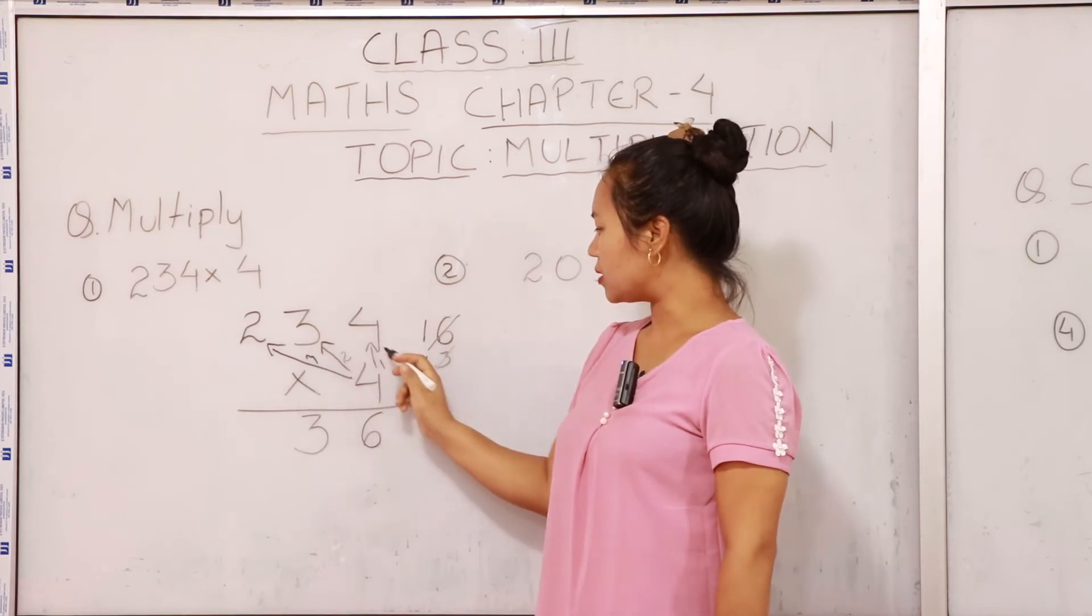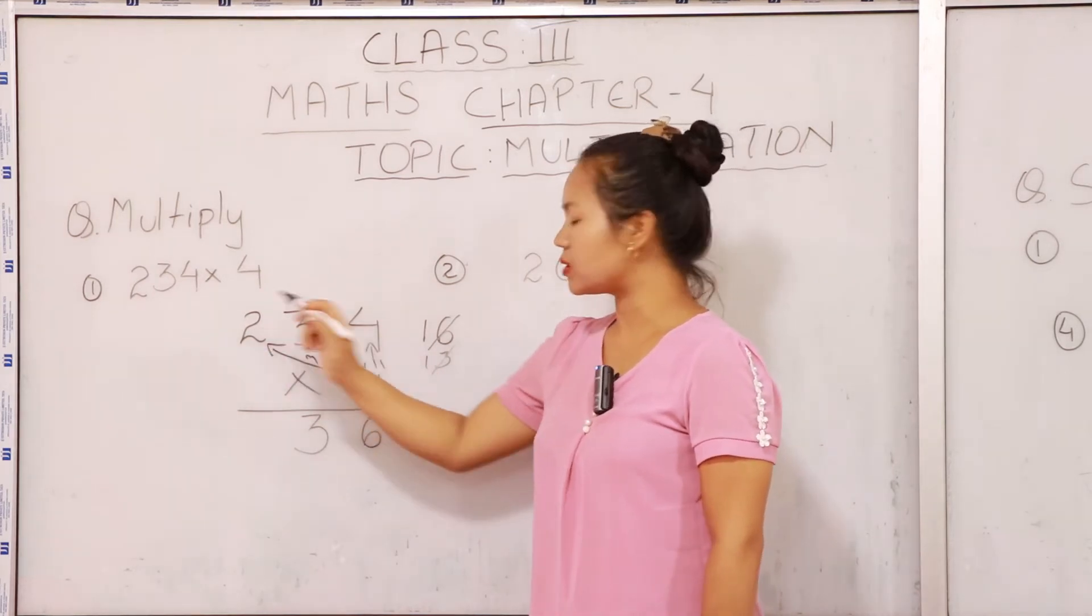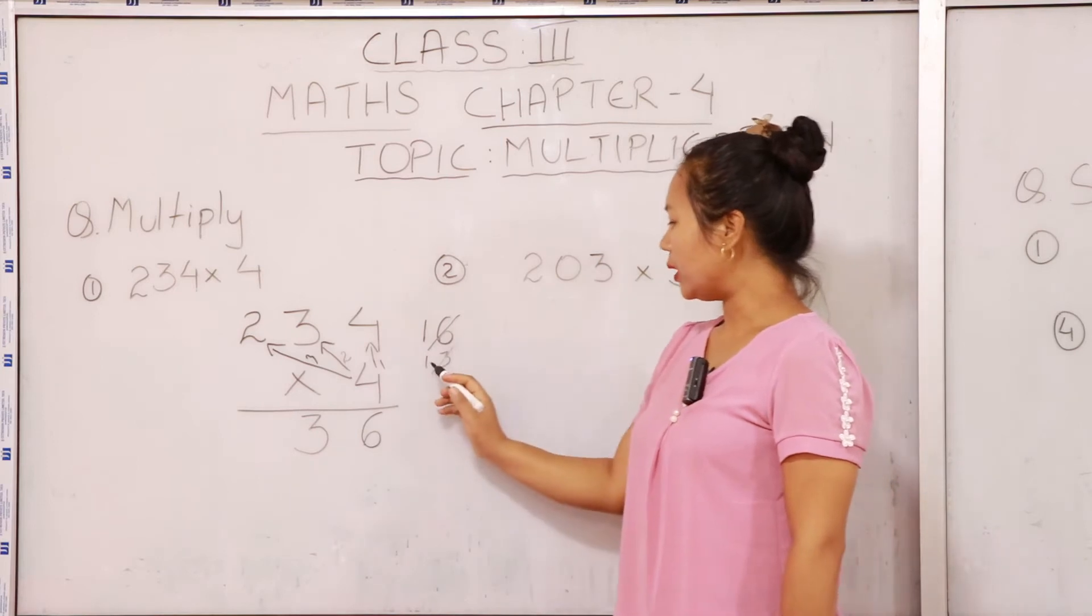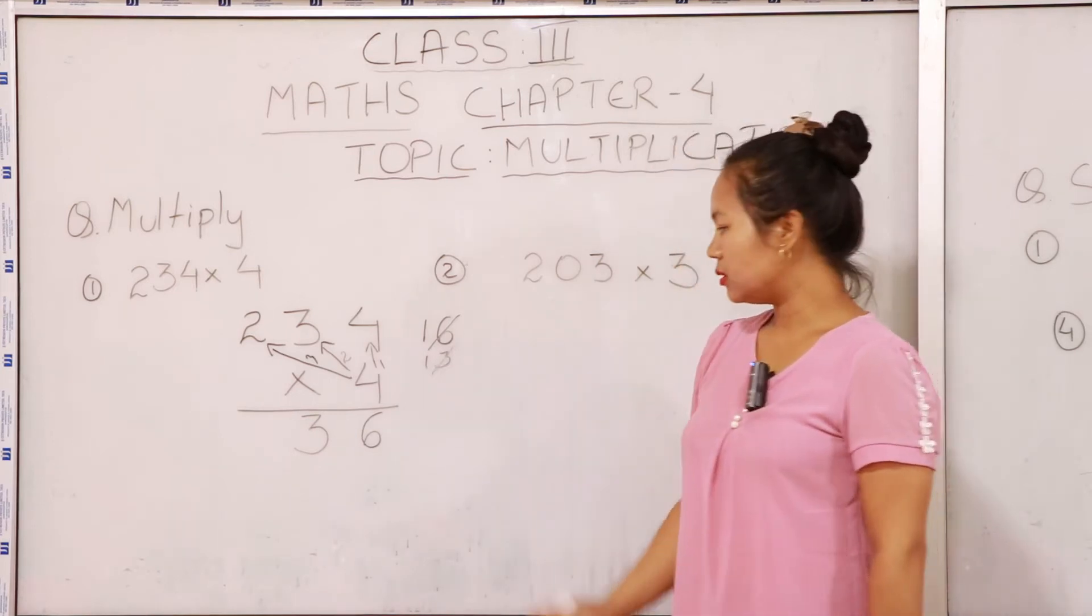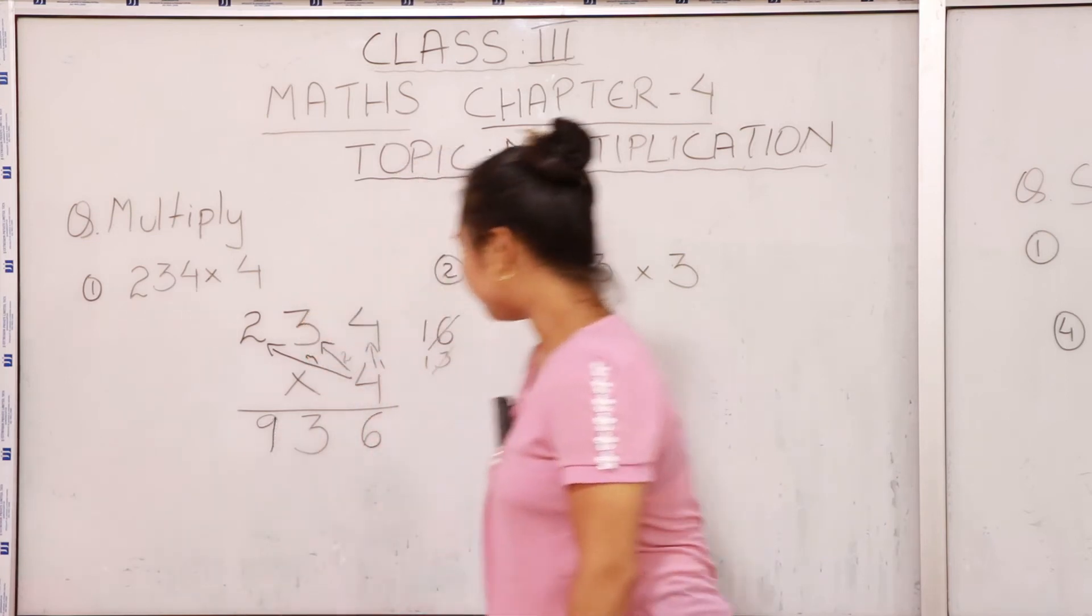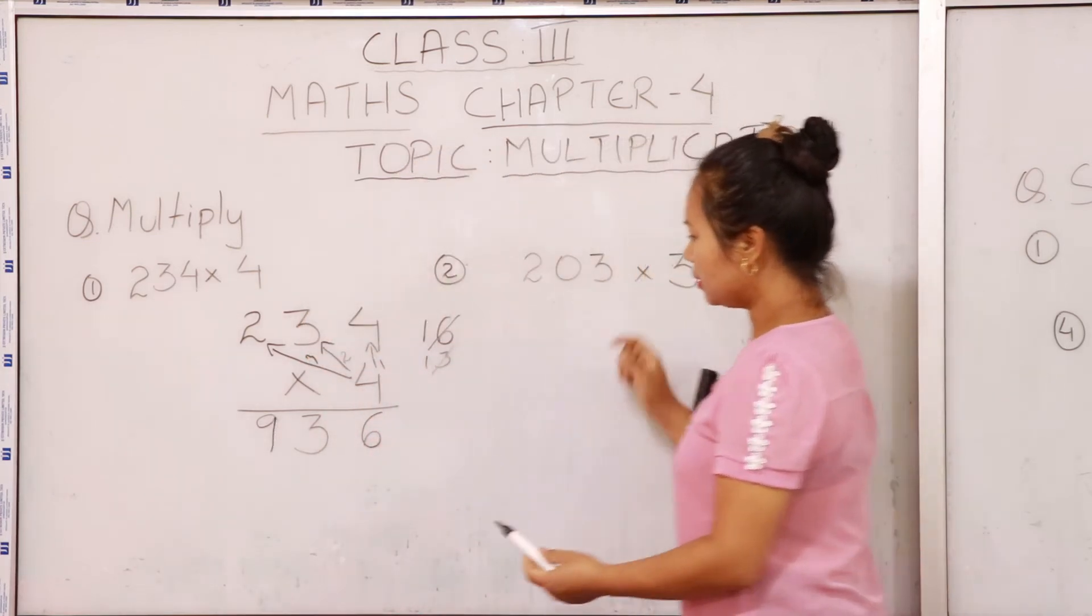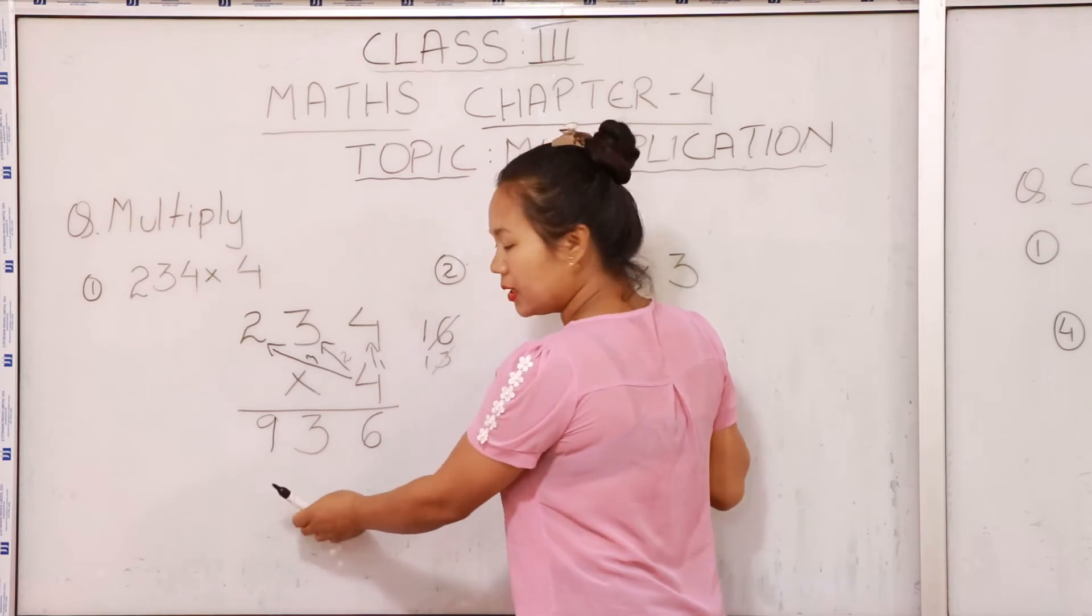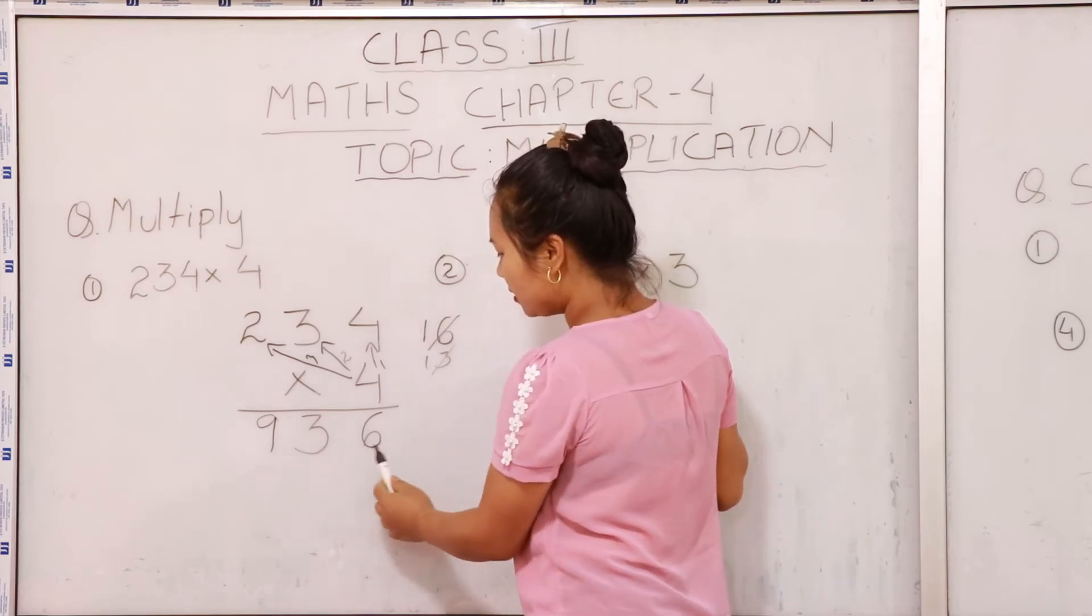So 4 twos are 8. So with this it will come to 9. So here the answer is 9, 3, 6.